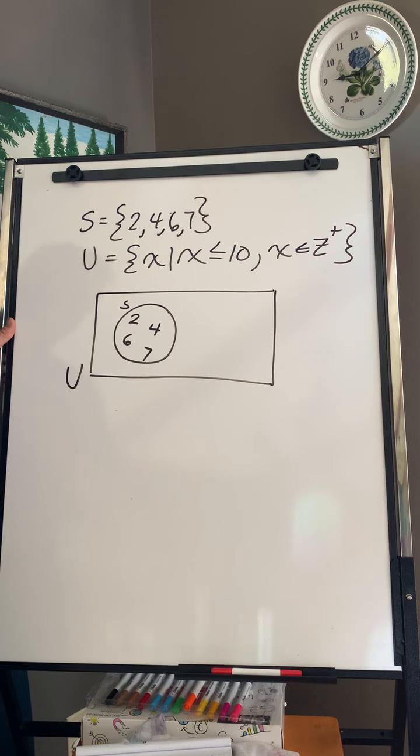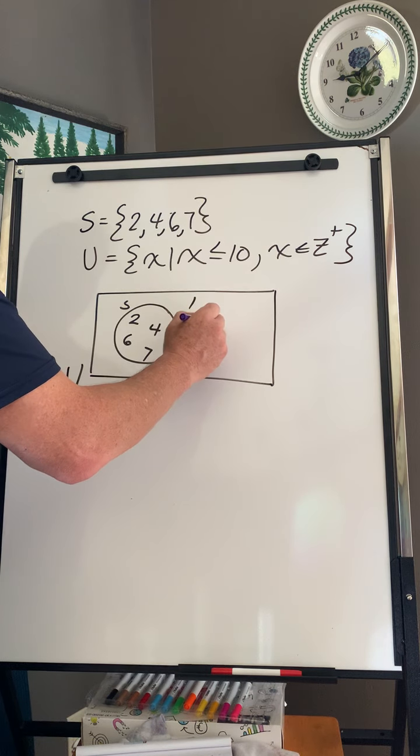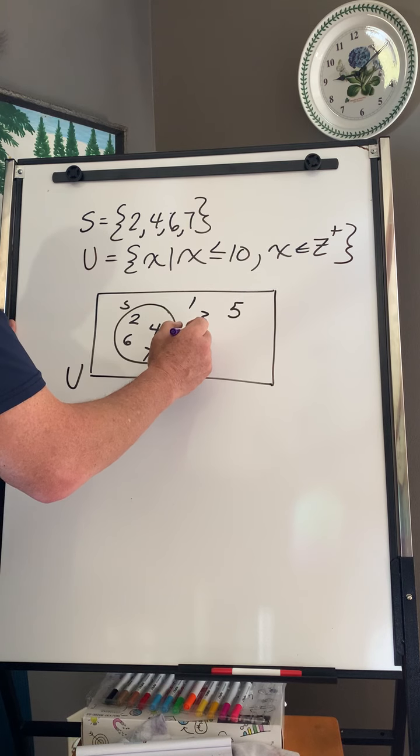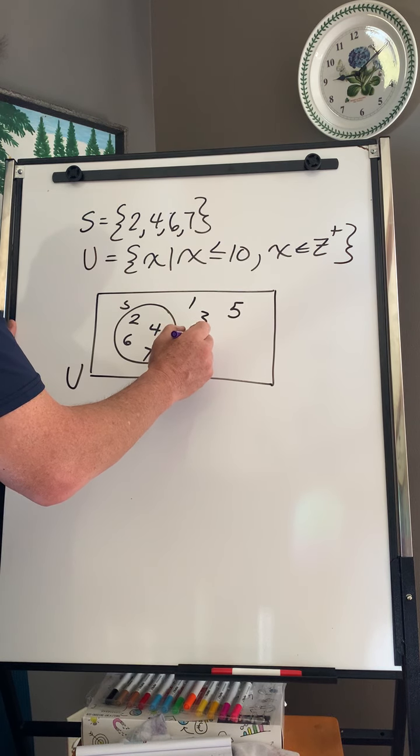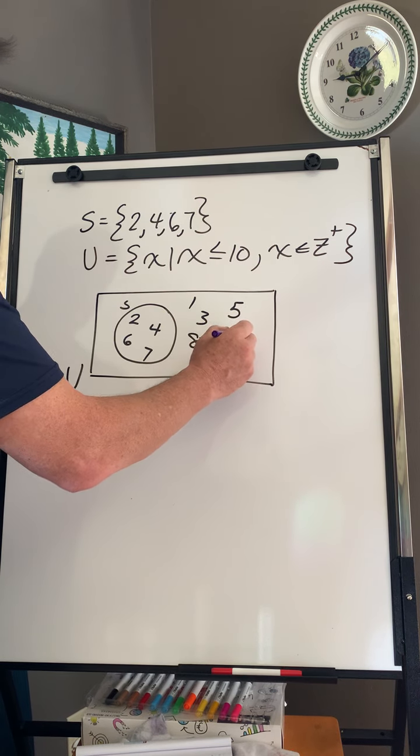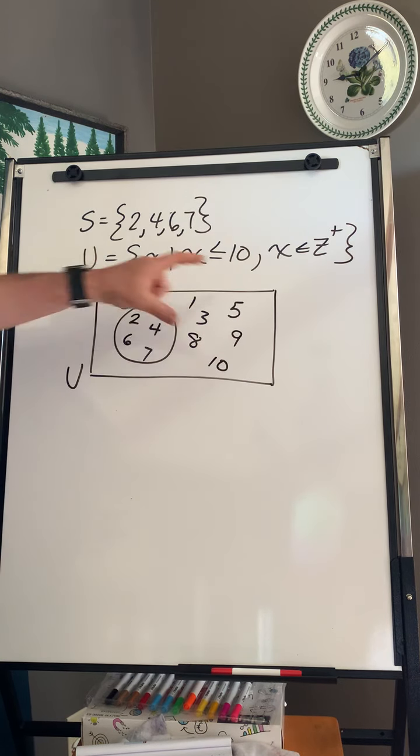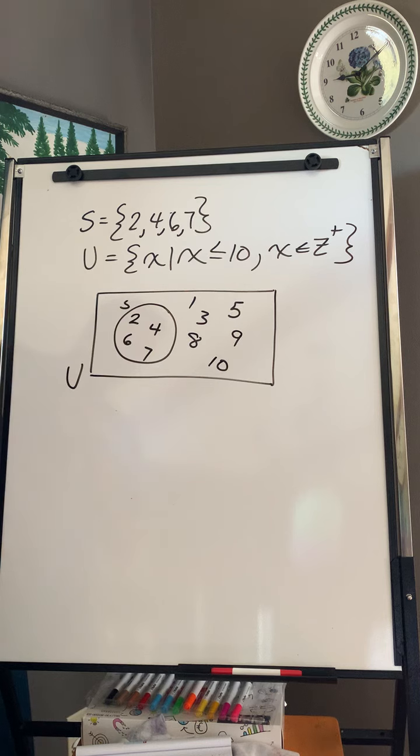And everything that's not in that set goes outside. I got 1, 3, 5, 8, 9, 10. So it can go anywhere inside the rectangle as long as it's not in the circle.